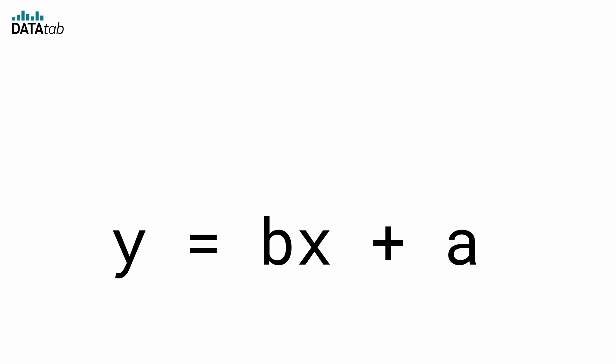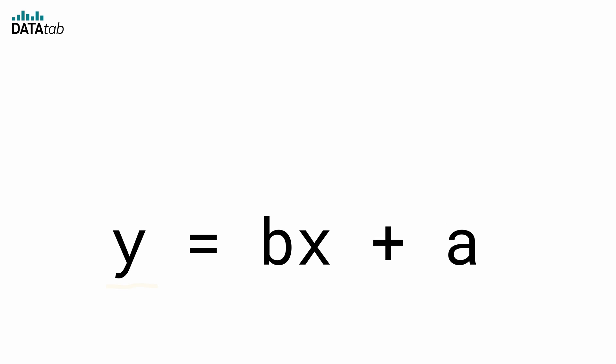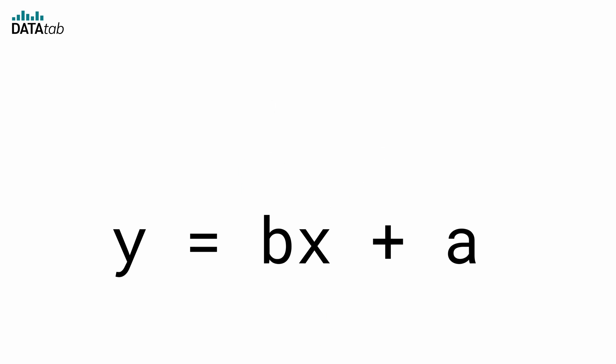But hold on, there's more — the equation for the line. The line has an equation: y equals b multiplied by x plus a. Here y is the response we're trying to predict, like ice cream sales. X is our predictor, like temperature. B is the slope, showing how much ice cream sales change when the temperature changes. And a is the y-intercept, telling us where the line crosses the y-axis. Basically, this equation is like the secret recipe to understanding how one thing influences another.